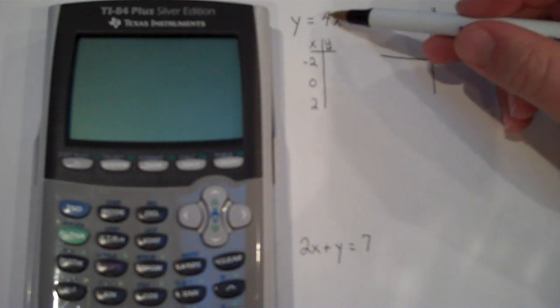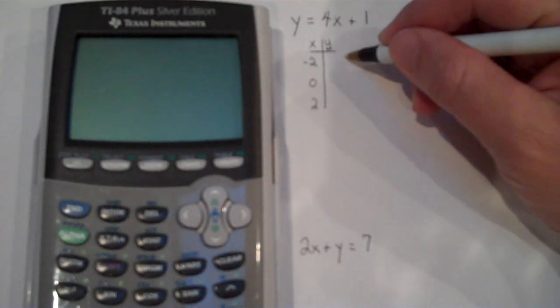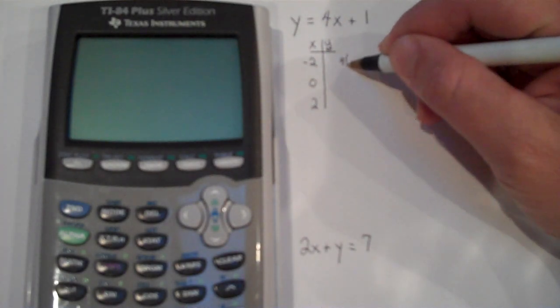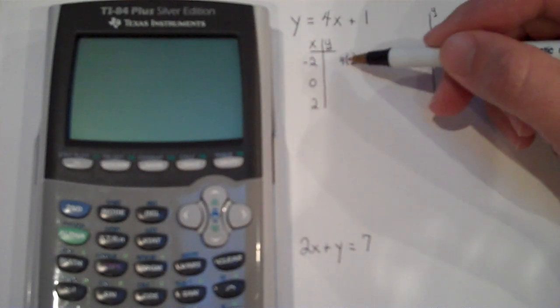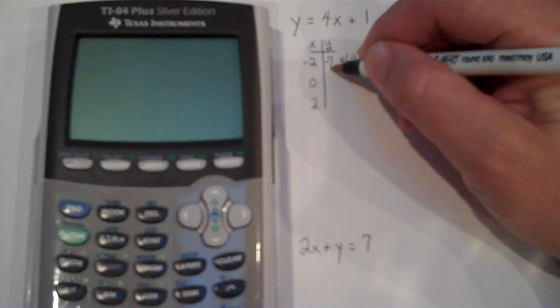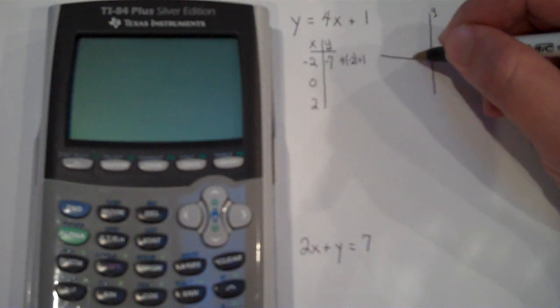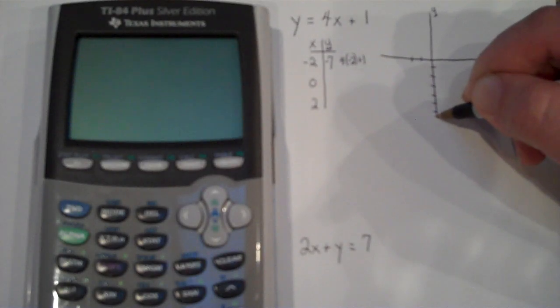Then for my output values, if the input is negative 2, then my output is 4 times negative 2 plus 1. That's negative 8 plus 1 which is negative 7. So if I graph that, negative 2, let's extend this down a little bit, 1, 2, 3, 4, 5, 6, 7. So that's going to be about right here.